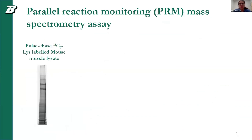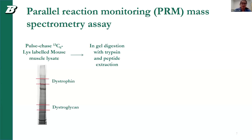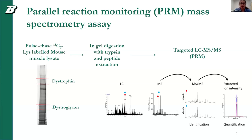In order to study this, we developed a parallel reaction monitoring mass spectrometry assay. Lysates from pulse-chase labeled mice were run across different time points, fractionated on a gel, and different bands containing proteins of interest were excised — in this example, dystrophin. The bands were in-gel digested with trypsin, peptides were extracted, and run using our targeted LC-MS method.